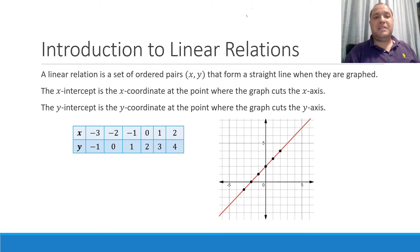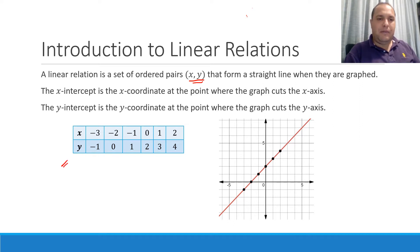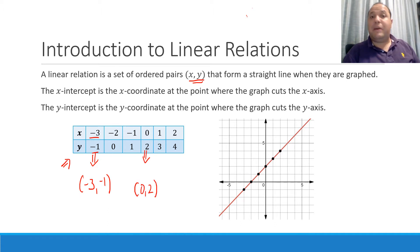A linear relation is a set of ordered pairs — that is just a set of coordinates — that when you plot them form a straight line. As an example, we've got a table here with an x-coordinate and a matching y-coordinate. Together these two values produce the coordinate negative 3, negative 1. This value here produces the coordinate 0, 2. That's how we can read from a table.